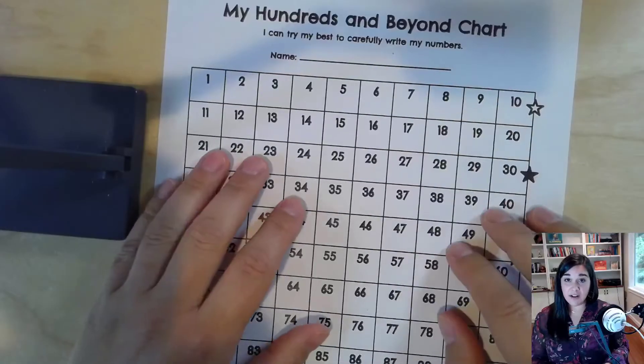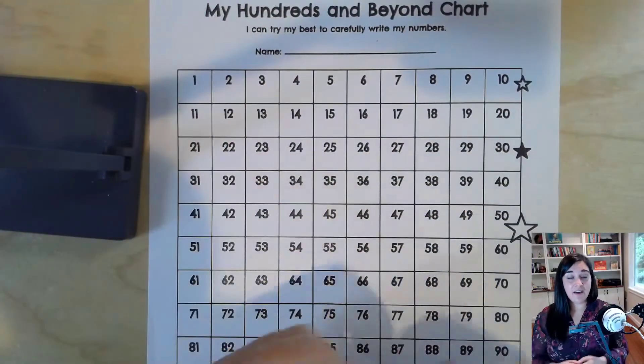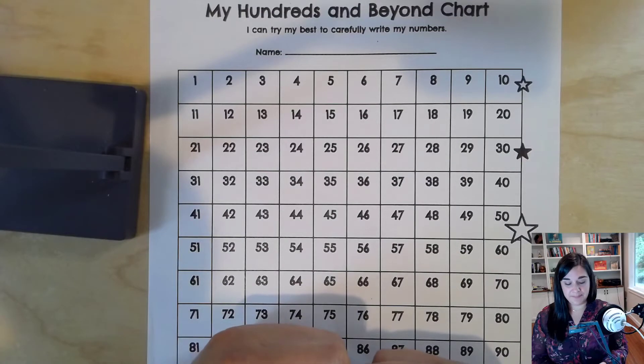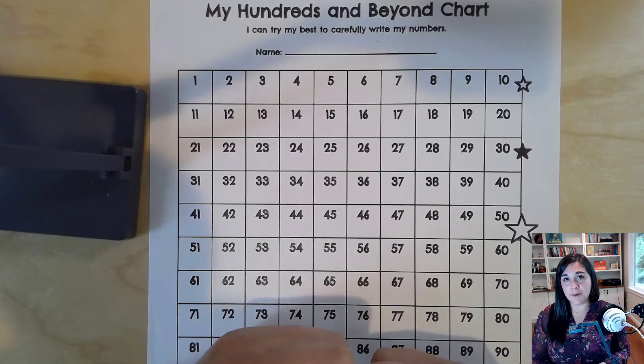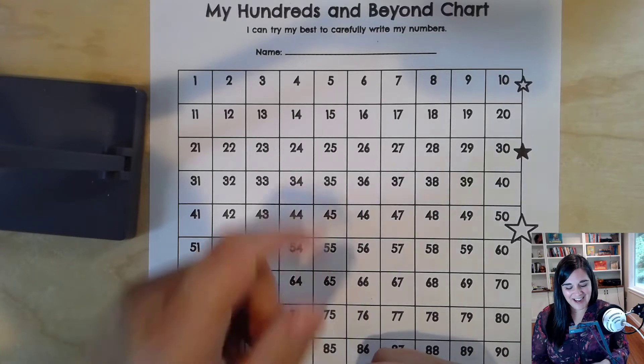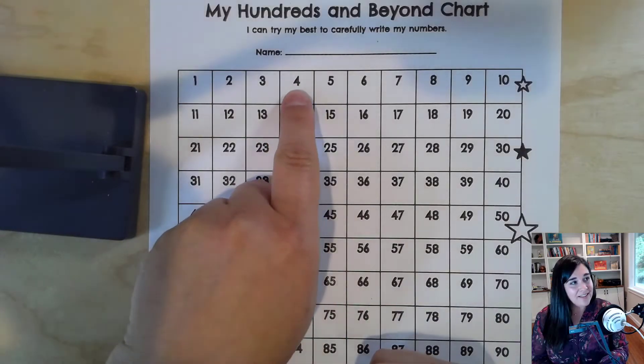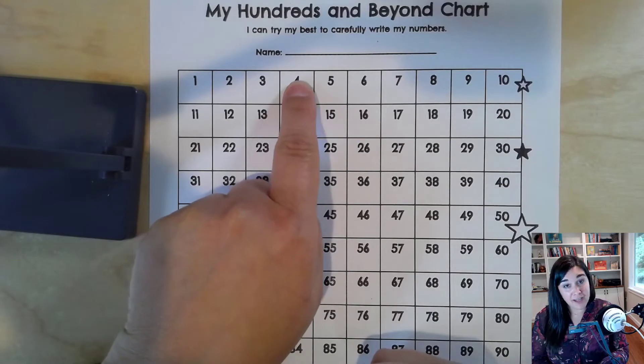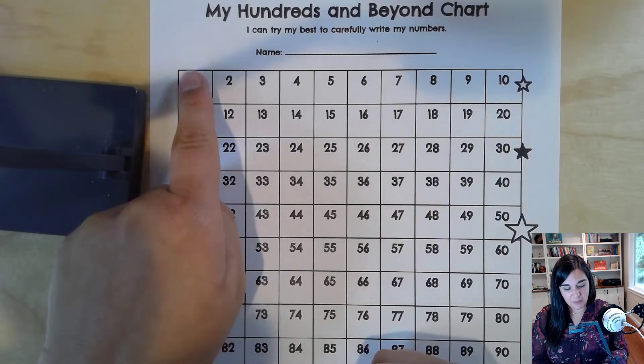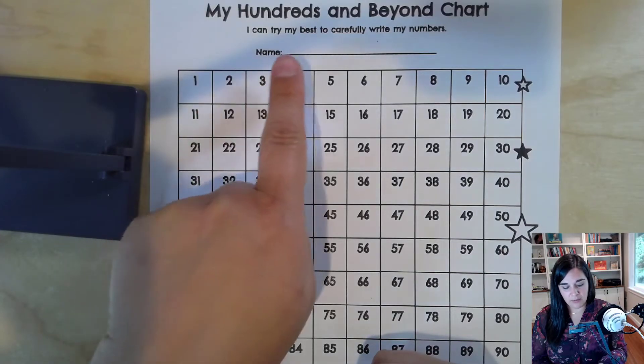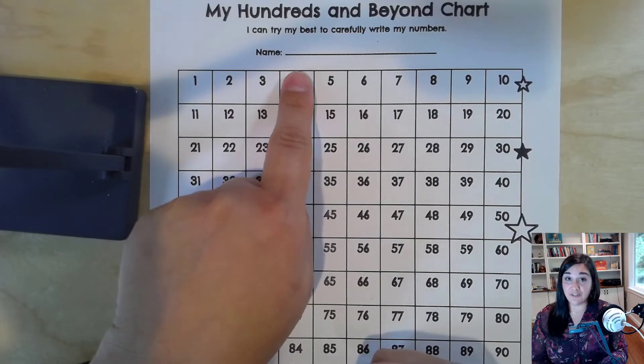I am going to have you start by finding a number that I say on the hundreds chart. Find the number 4. Did you find it? You're right. It's right there. The number 4. If you're not sure how to find the number 4, you can start at the beginning and count. 1, 2, 3, 4. And put your finger there.